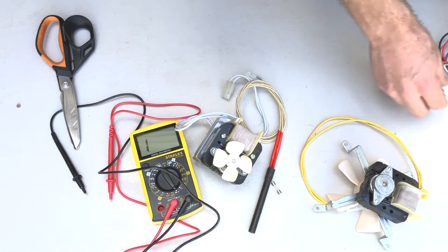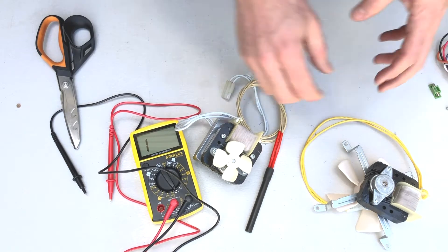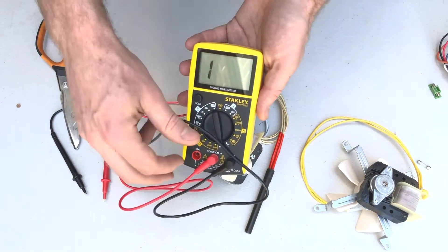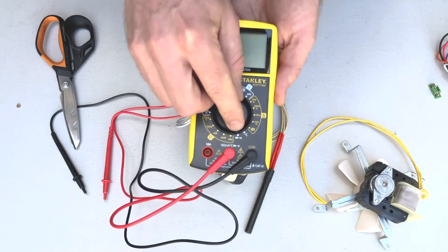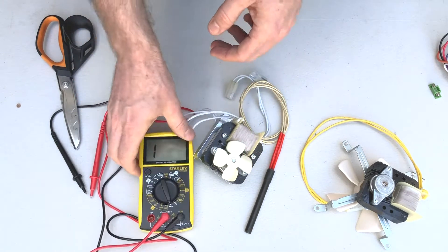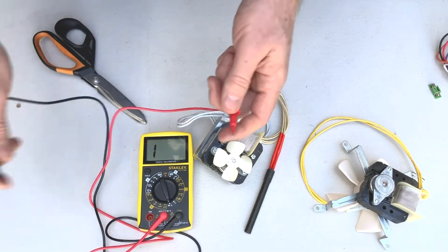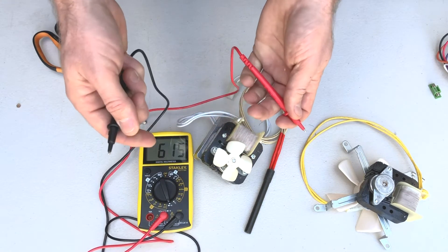So what we do is we can actually identify which of these devices has a problem by using a simple multimeter like this one. So we just put it on this beep setting down here. And what that means is it allows us to detect if there's a closed circuit and it'll give this beeping noise.